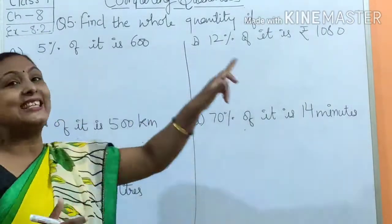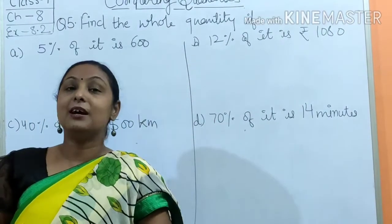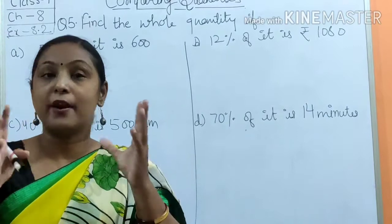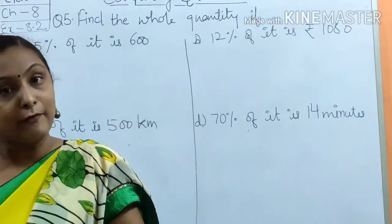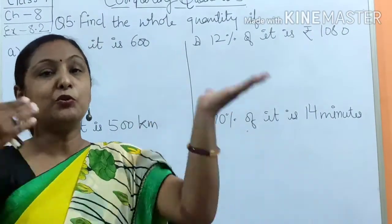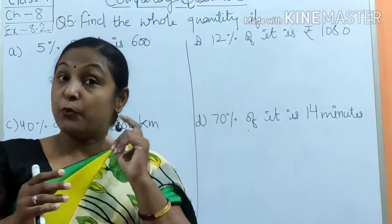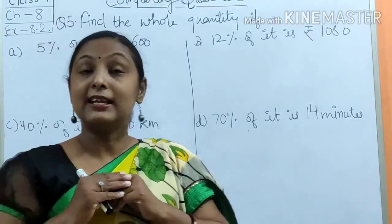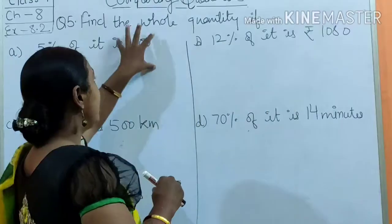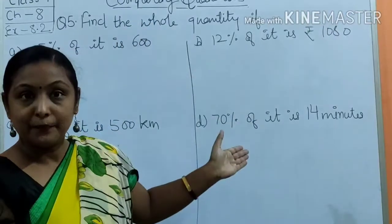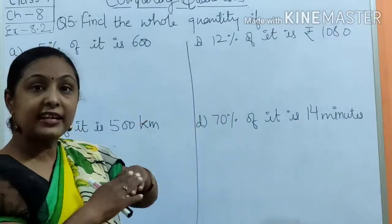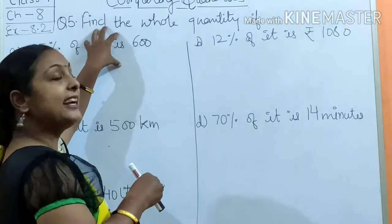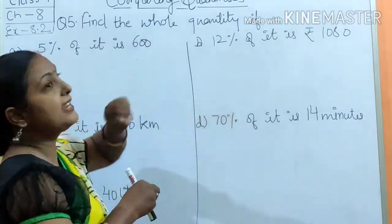What is given in the question: 5% of it is 600. I don't know the quantity, but they have given me the answer. In question number 4 we had to find this value. Here the answer is already given, and I need to find the quantity.